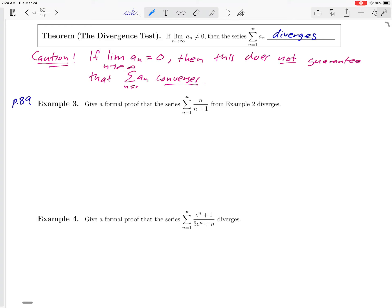We're going to take a look at example 3 on page 89 of the workbook. This asks us to give a formal proof that the series n over n plus 1 from example 2 diverges. This is the same example that we looked at in a previous video.